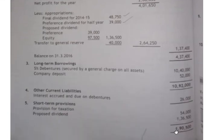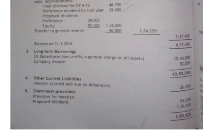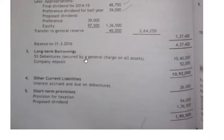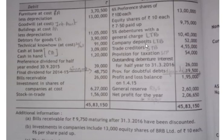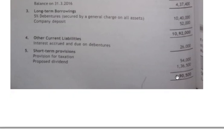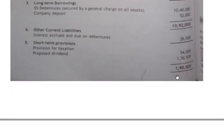Moving on to the third working note — long-term borrowings. Five percent debentures with a general charge is ten lakh forty thousand, secured by a general charge on all assets. Company deposits is also a long-term borrowing of fifty-two thousand. Total long-term borrowings: ten lakh ninety-two thousand.